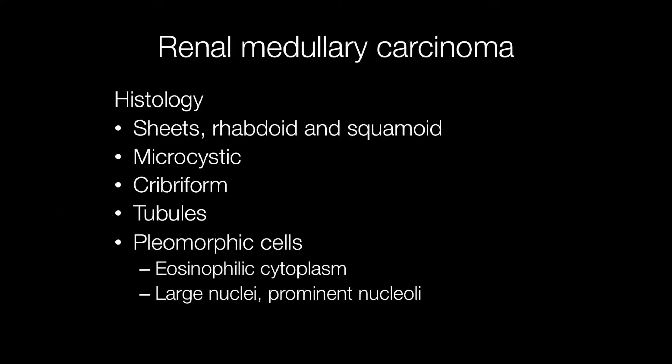Histologically, renal medullary carcinomas are composed of sheets of cells. There may be rhabdoid cells, cells that have a squamoid appearance. There may be areas with microcystic change, cribriform areas and tubule formation. The cells are pleomorphic with abundant eosinophilic cytoplasm, large nuclei and prominent nucleoli, and mitotic figures are frequent. Collections of neutrophil polymorphs are often seen and the stroma is frequently desmoplastic fibrous.